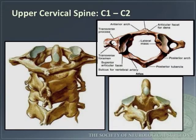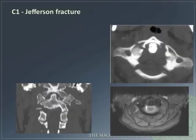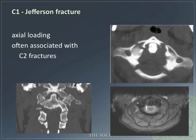The upper cervical spine, C1 and C2, have unique anatomy as illustrated here. A C1 Jefferson fracture occurs with axial loading and is often associated with C2 fractures. In this condition, it is key to assess the transverse ligament.